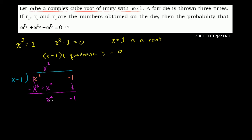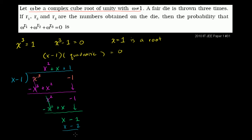Bringing down the terms: x minus 1 goes into x minus 1 exactly one time. 1 times x minus 1 is x minus 1, and we get remainder 0. It divided evenly, which makes sense because x equals 1 is a root. So we can write the full factorization as x minus 1 times x squared plus x plus 1 equals 0.